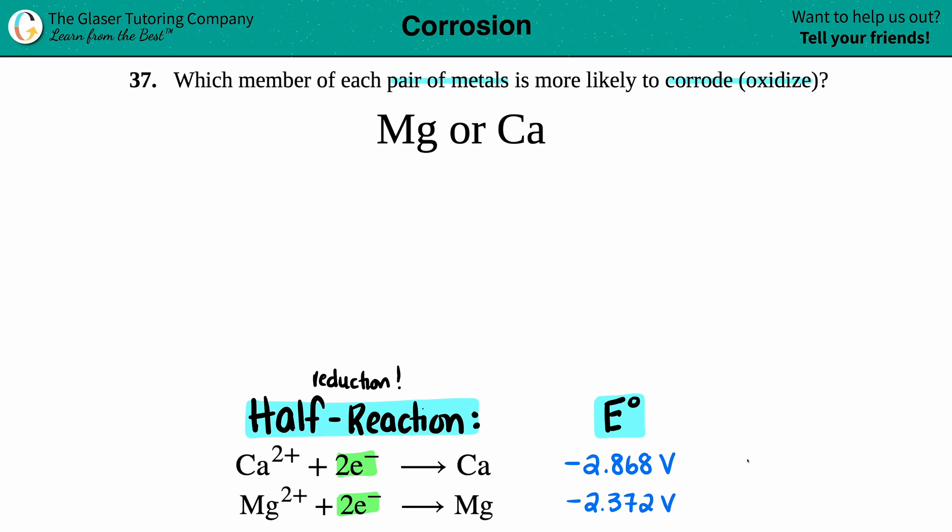So the thing is, when you look at these E values, since we're in reduction world, the positive the number, the higher the number, the more chance that it wants to be reduced.